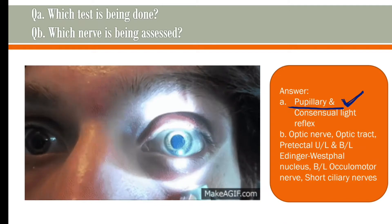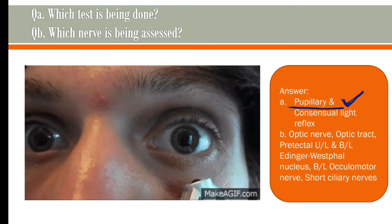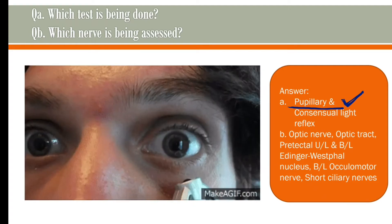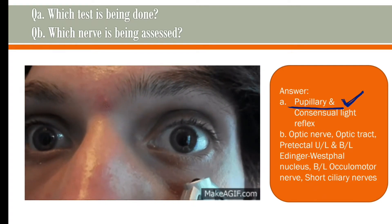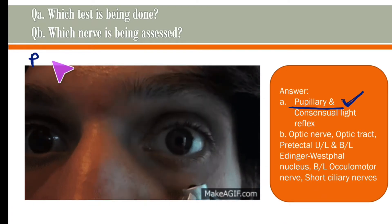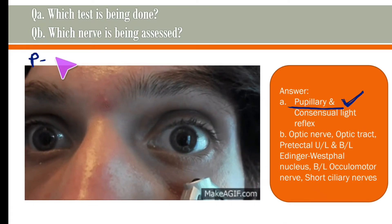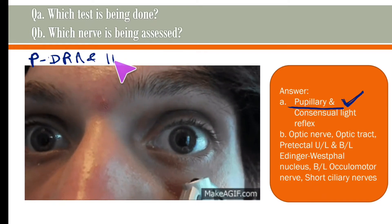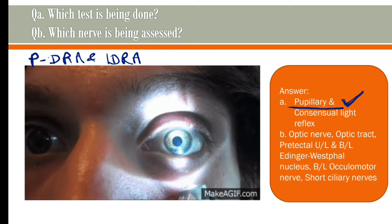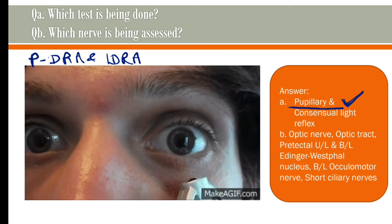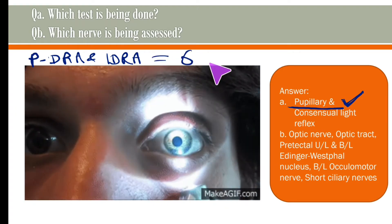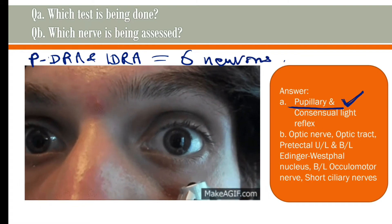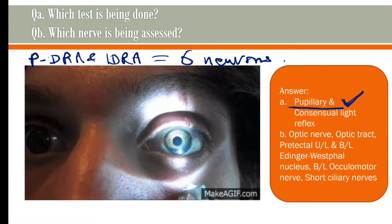Regarding which nerve is being assessed — it's not actually a single nerve, it's a reflex arc: the pupillary reflex arc. Both the direct and indirect reflex arcs are made up of six neurons total.